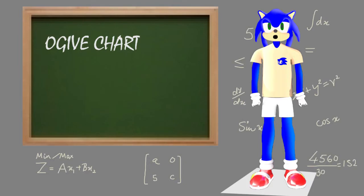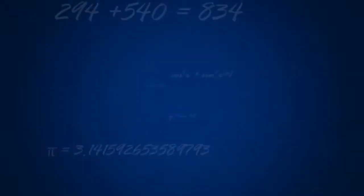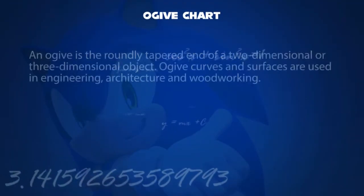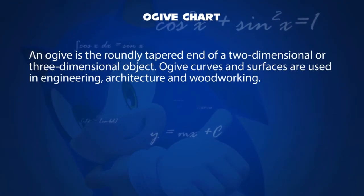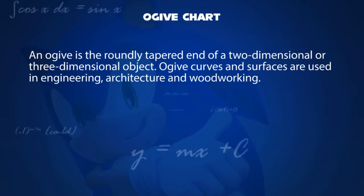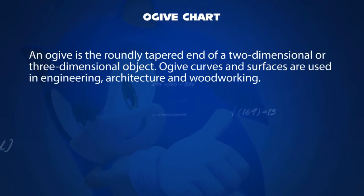Hello, I'm Sonic. We will learn about ogive chart. An ogive is the roundly tapered end of a two-dimensional or three-dimensional object.